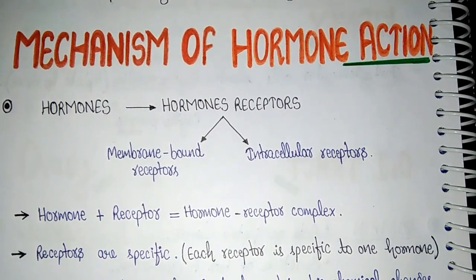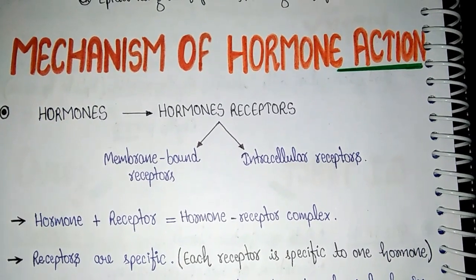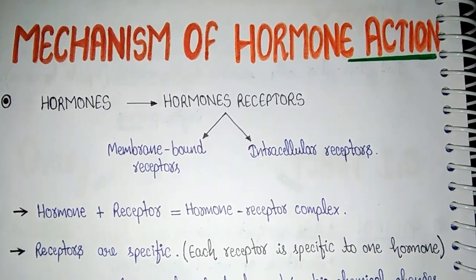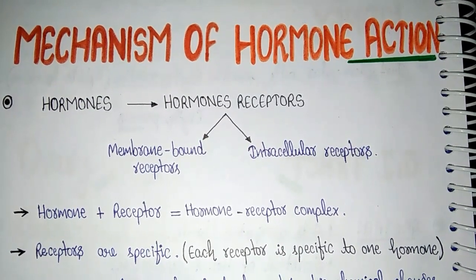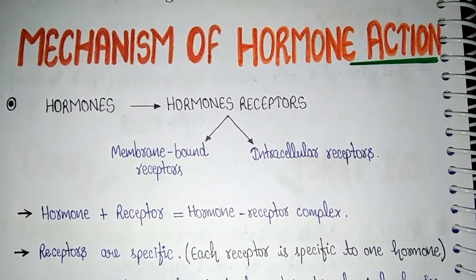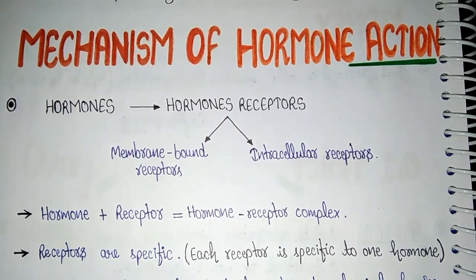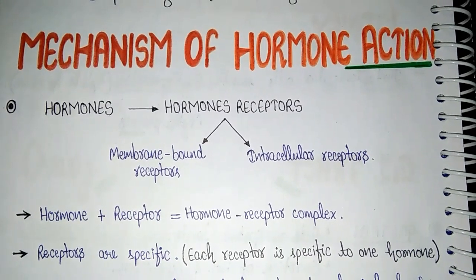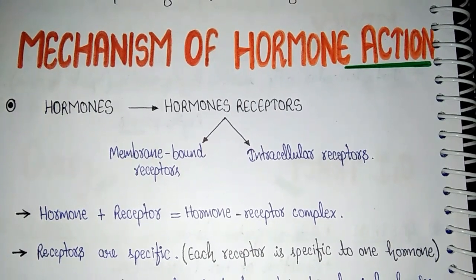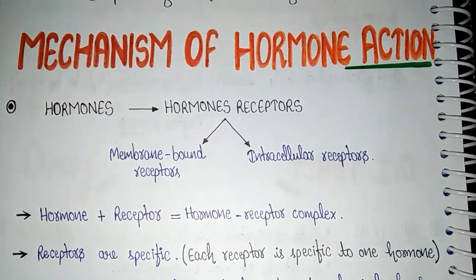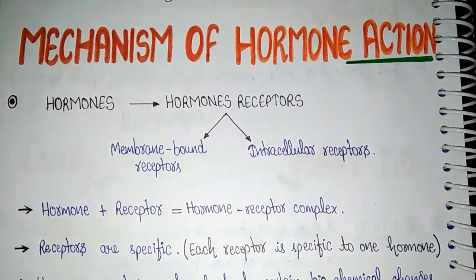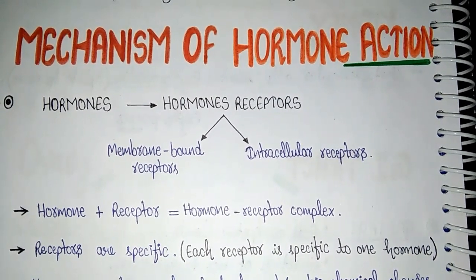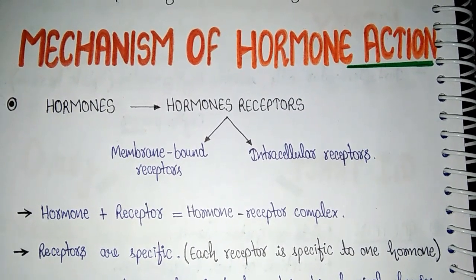Ab tak aap sabhi ne endocrine glands ke baare mein padha. Various endocrine glands are there in the human body. Unke secretion ke baare mein padha. Aap sabhi ne dekha ki endocrine glands ko hum ductless glands kehete hai, because they release their secretion directly into blood. Endocrine glands ke secretion ko hum hormones kehete hai. Toh hume aaj yehi samajhna hai ki hormones kaise act karte hai. Aap sabhi jante hai ki hormones are chemical messengers, toh iska matlab kiya hua ki hormones message leke jaate hai. Ab message leke jaate hai toh kahin toh jaate hai.